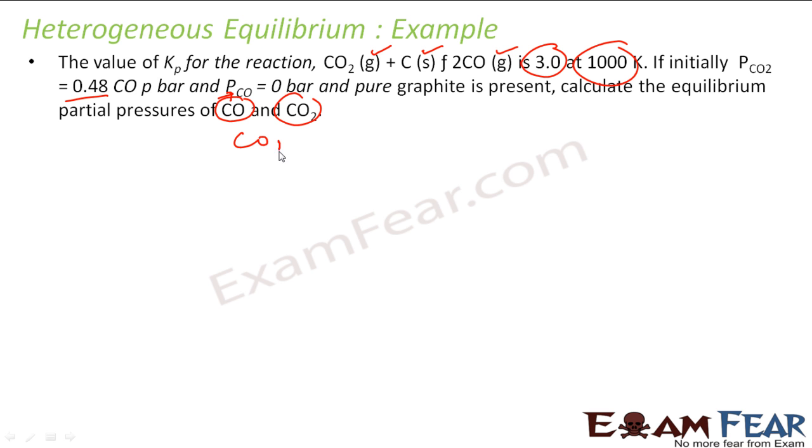So let's solve this example: CO2 plus carbon gives CO. This is in gas, this guy is solid, and this guy is gas, and Kp is given 3 at 1000 Kelvin. So at t equals 0, they say that the initial pressure of carbon dioxide is 0.48 bar, and this we can ignore, and CO was 0. At t equals equilibrium, let us suppose 0.48 bar becomes 0.48 minus x. Since x is used, it will form 2x because this is 1, this is 2. For CO2 it is 1, for CO it is 2. So if x CO2 is used, 2x CO will be formed.